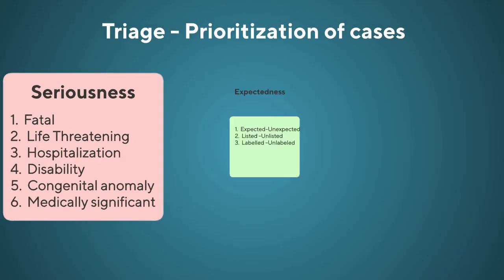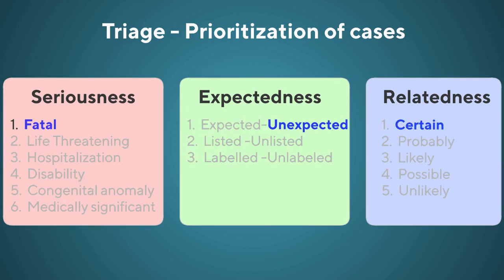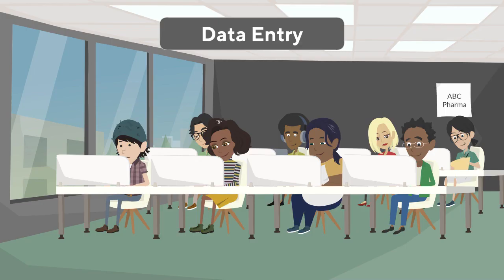As per the guidelines, all ICSRs should be processed within predefined timelines. To ensure timely processing, all reports are prioritized based on seriousness, expectedness, and reported relatedness. For example, if an adverse event is fatal, unexpected, and certainly related to the medicinal product, it will be given high priority for processing.